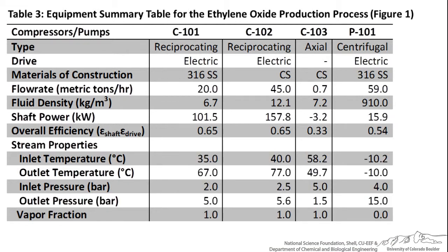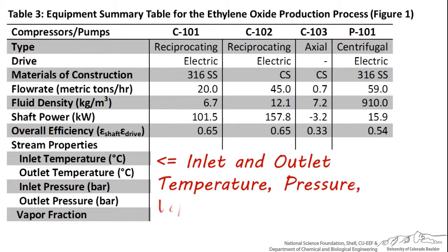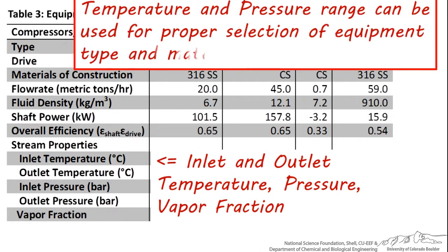The last section of this table features a list of stream properties, including inlet and outlet temperature and pressure, and vapor fraction of the stream. These values are provided in the stream tables in ChemCAD or Aspen. This information is very useful for helping select the correct type of equipment and materials of construction. When listed, it's easier to see the range of temperatures and pressures the equipment will be subjected to, and this can be useful when speaking to a supplier about purchasing, replacing, or verifying that the equipment type and material were selected properly.